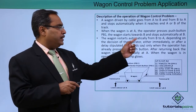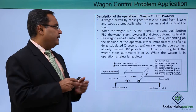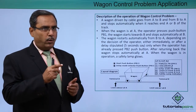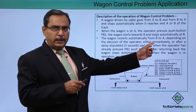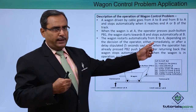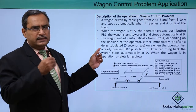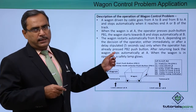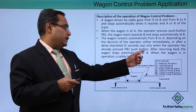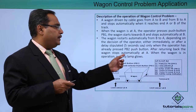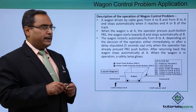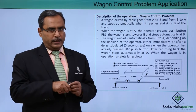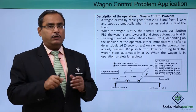The wagon returns automatically from B to A depending on the decision of the operator. From B to A it can come back in two different modes. Mode 1: immediately after reaching B it will return to A. Mode 2: after a stipulated delay of 5 seconds and only when the operator has already pressed PB2. After returning, the wagon stops automatically at station A. When the wagon is in operation, a safety lamp will glow to indicate the operation is on.